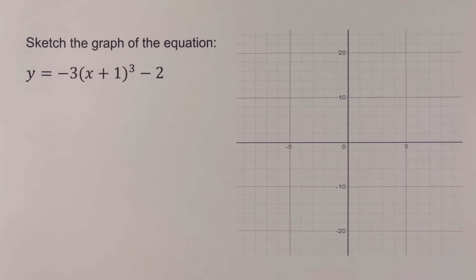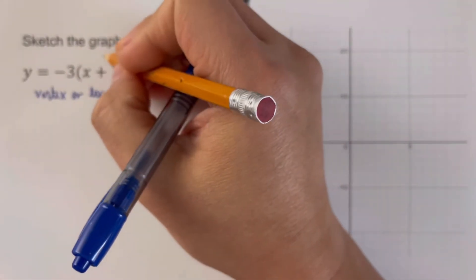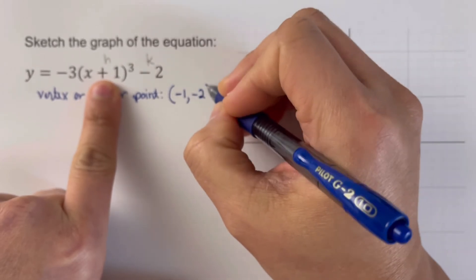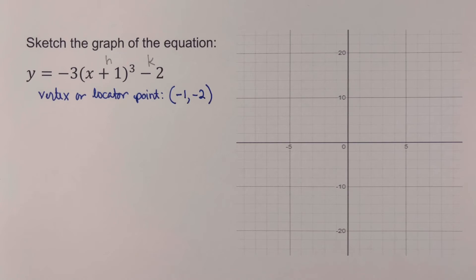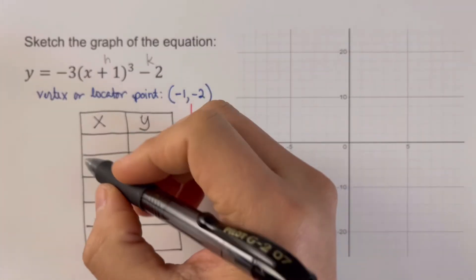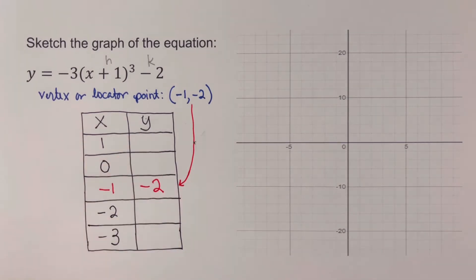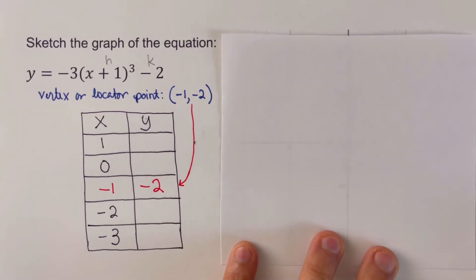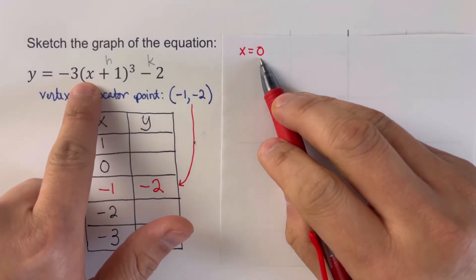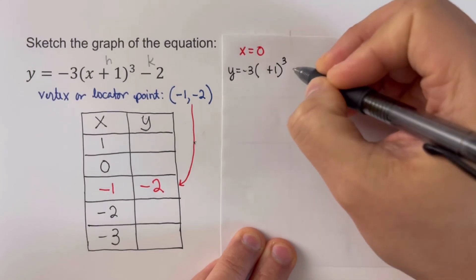Going over the second problem: our first step is to determine the locator point or vertex. The vertex is (h, k). We switch the signs, giving us negative one and negative two, so our vertex is (negative 1, negative 2). The second step is to create and complete the table of values. We add x values of 0, 1, negative 2, and negative 3. For x equals 0: y equals negative 3 times (0 plus 1) cubed minus 2. Zero plus 1 is 1, one cubed is 1, negative 3 times 1 minus 2 equals negative 5.